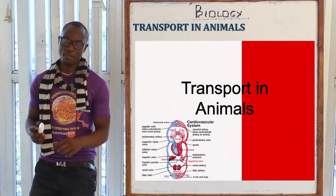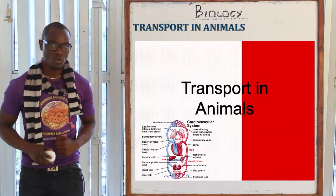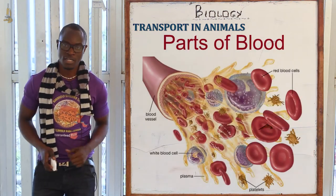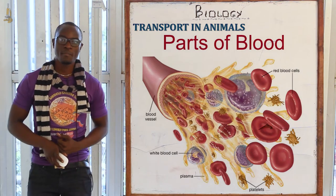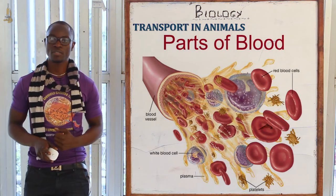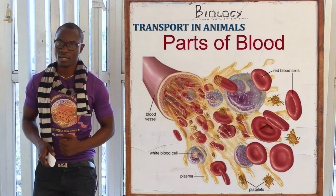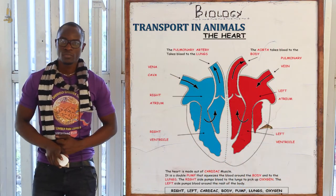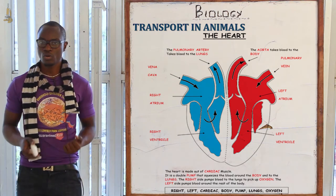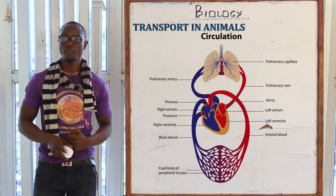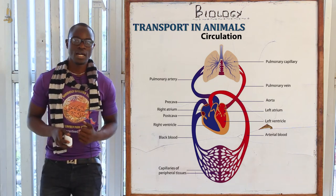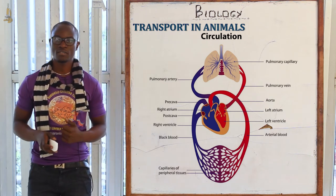Welcome to this class. Today we will discuss transport in animals. The main transporting medium in animals is the blood, which has different components: the red blood cells, the white blood cells, and the platelets. In transport in animals we also have the heart, which is responsible for pumping blood to all parts of the body, and we have the blood vessels, which are the regions where blood is contained.